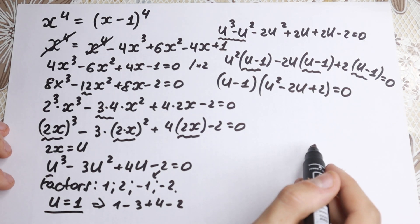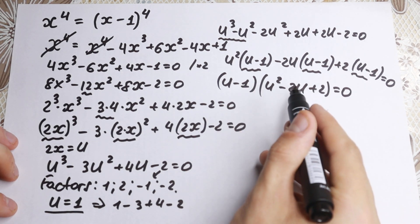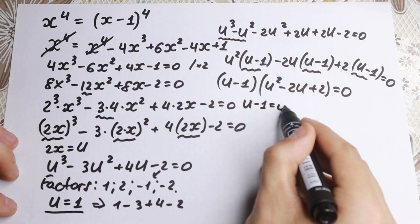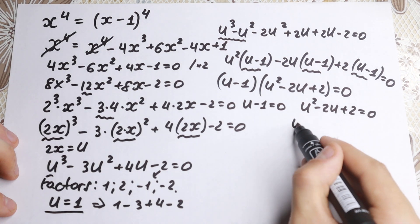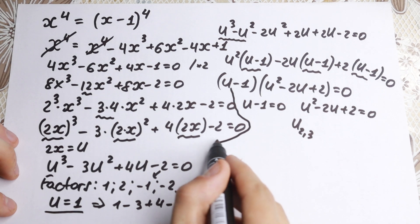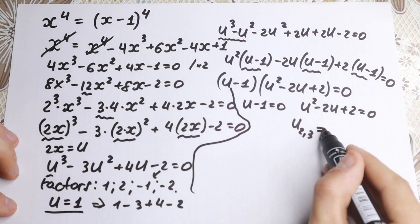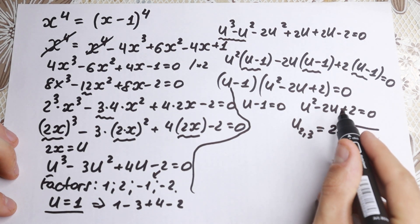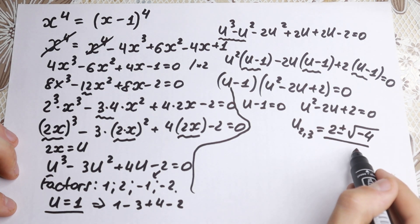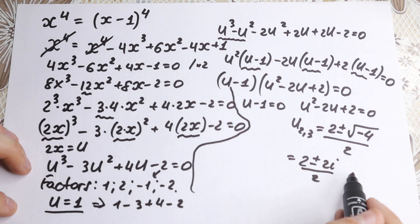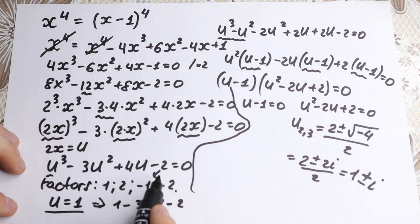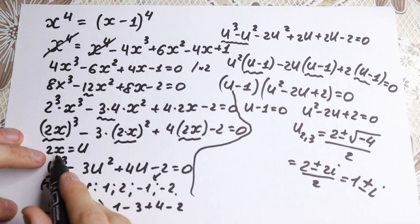We now have a product equal to zero. From u minus 1 equals 0, we get u equals 1. For the quadratic u squared minus 2u plus 2 equals 0, using the quadratic formula: u equals 2 plus or minus the square root of 4 minus 8, all over 2. That gives 2 plus or minus 2i over 2, so u equals 1 plus or minus i — our complex solutions.